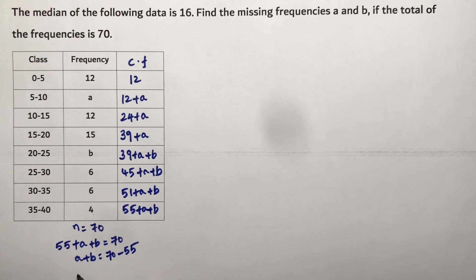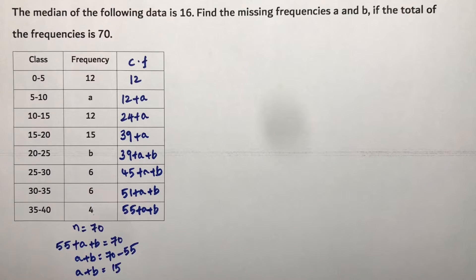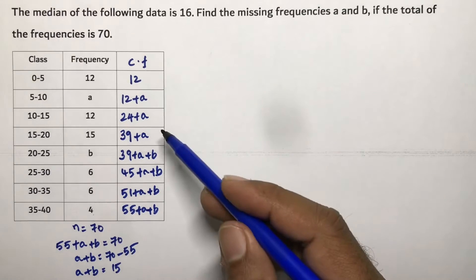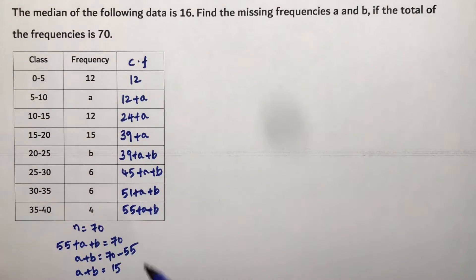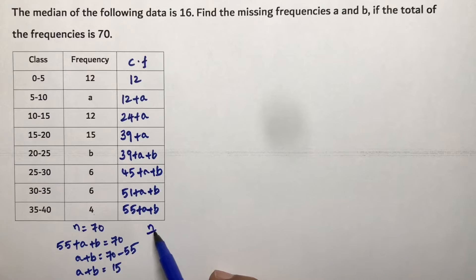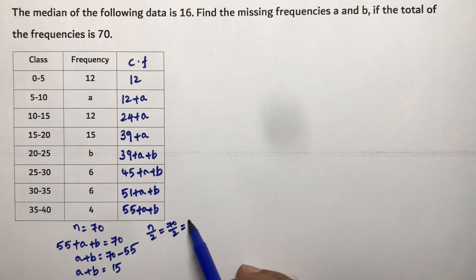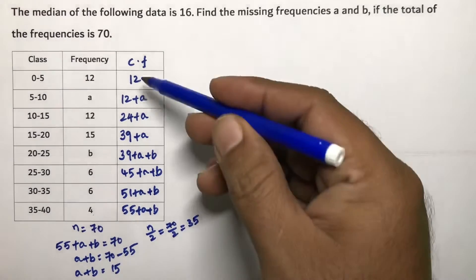So now we need to select the median class. Now which class will we select as the median? See, actually we used to do n by 2, that is 35.